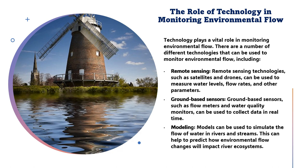These technologies are used to monitor environmental flow in a variety of settings, including rivers, which are the most important surface water bodies; streams, which are smaller than rivers but also important for ecosystems supporting distinct biodiversity; and lakes, which are still water bodies with distinct aquatic life used for drinking water and recreation. By using these technologies to monitor environmental flow, we can help to ensure that river ecosystems remain healthy and productive, which is important for both people and the environment.